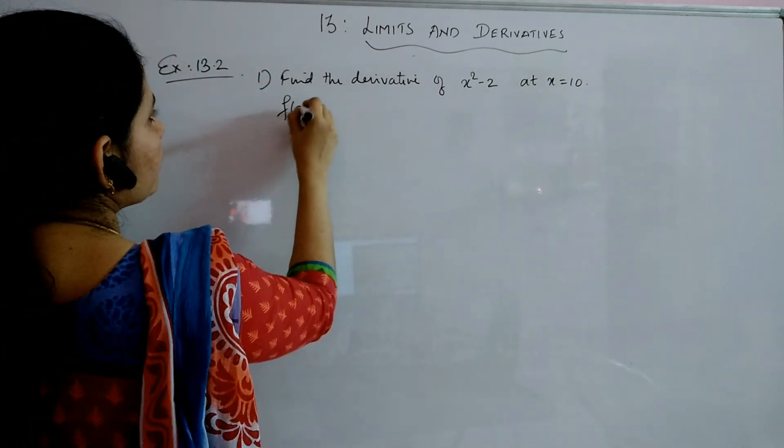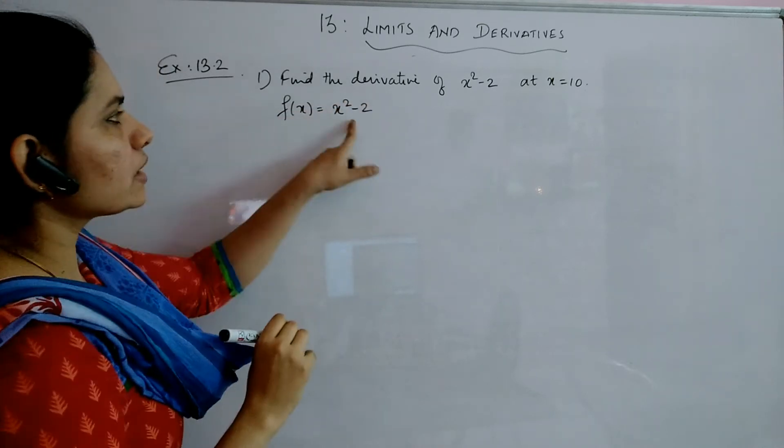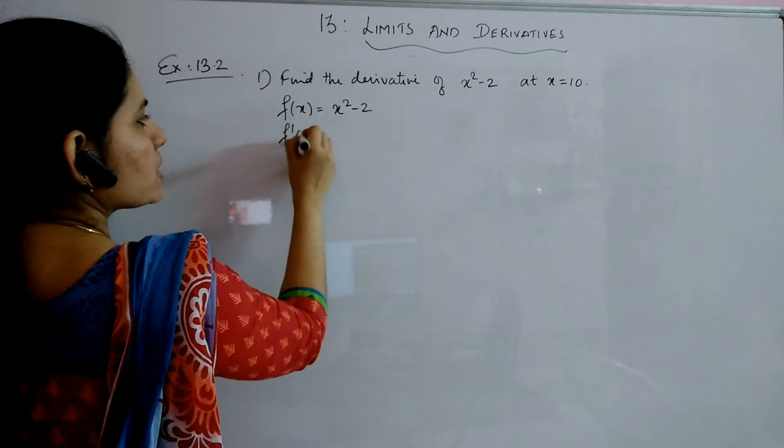First of all, you take the question as f of x. You have to find out the derivative of this, which means you have to find out what is f dashed of x.